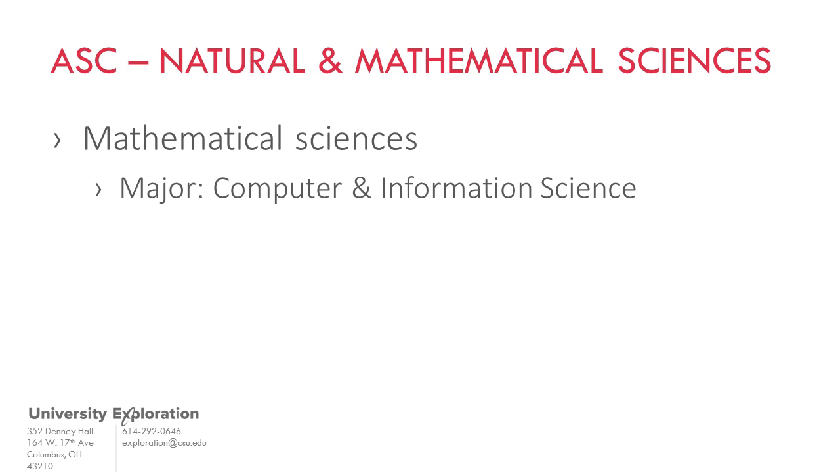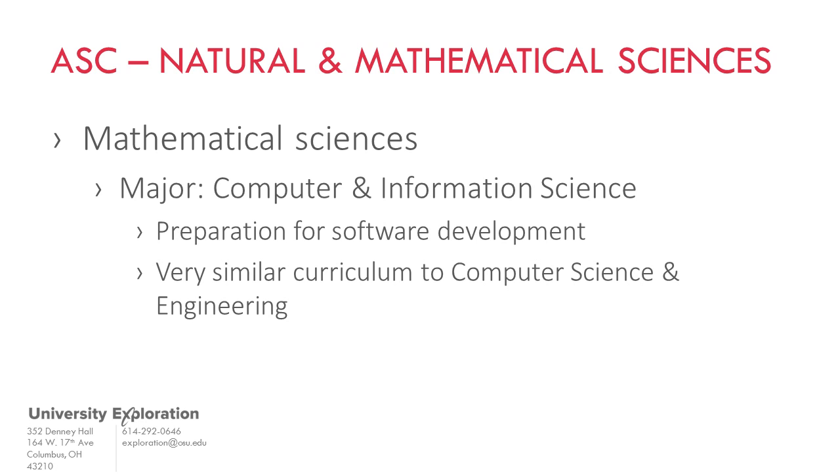The Computer and Information Science major provides you with the skills to become a software developer. The core of this major is similar to the Computer Science and Engineering major in the College of Engineering. But instead of taking engineering courses, CIS majors follow the broader and more rigorous Arts and Sciences general education requirement.